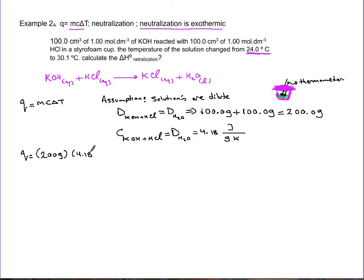So Q equals 200 grams multiplied by 4.18 joules per gram per degree Kelvin times the difference in temperature, which is 30.1 minus 24, which is 6.1 Celsius or Kelvin. Kelvins cancel, grams cancel. Your final answer at this stage is 5099.6 joules.